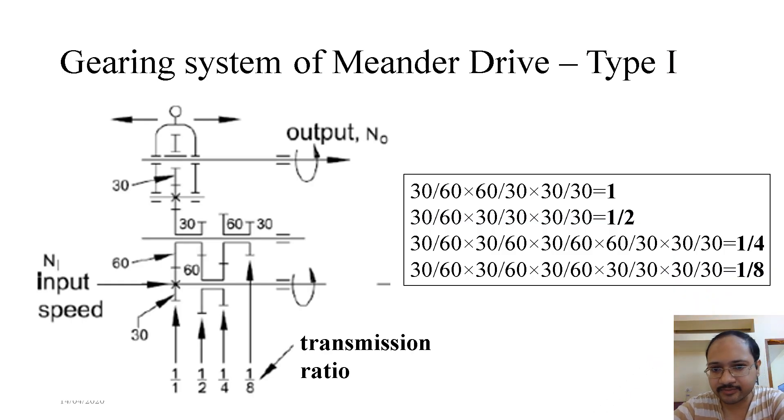There are two gearing systems of Meander Drive: Type 1 and Type 2. In Type 1, as we can see, there are input shaft, output shaft, and also a transition shaft. The input speed Ni is transmitted to No through a series of sliding clusters, and the gear transmission ratios which can be obtained from Type 1 are 1/1, 1/2, 1/4, and 1/8.